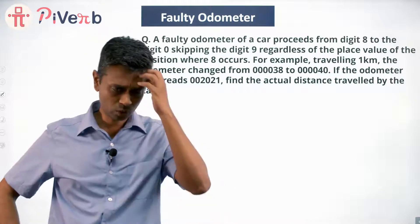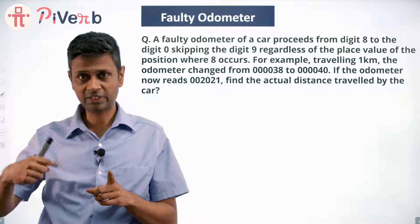First of all, it is confusing. So this odometer goes 1, 2, 3, 4, 5, 6, 7, 8 and then 0.